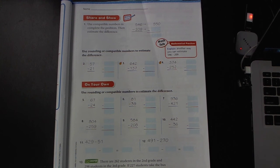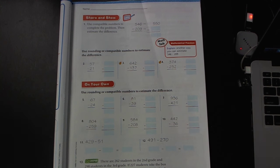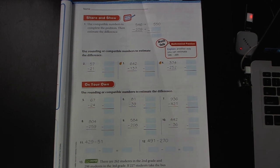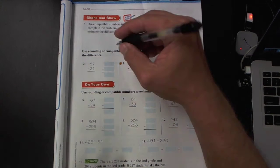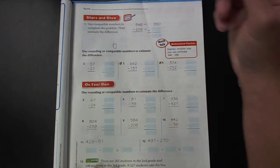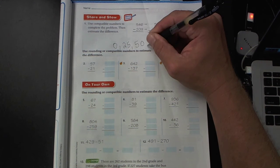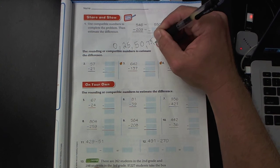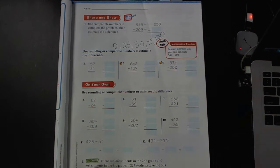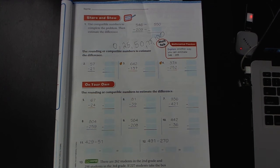Welcome my third graders to 1.8, Estimating the difference. We're going to be using compatible numbers and you are going to want to use either zero, 25, 50, 75, or is it going to round up to the next one?